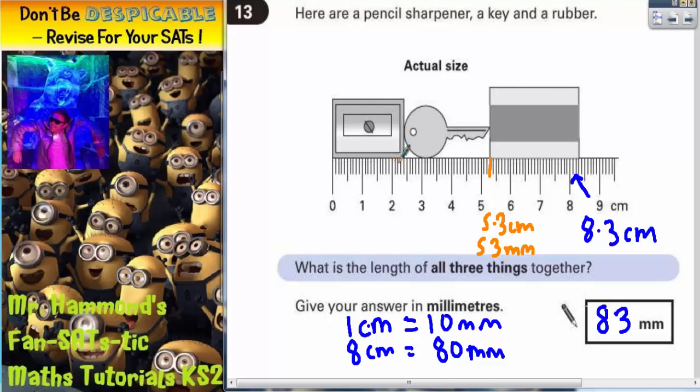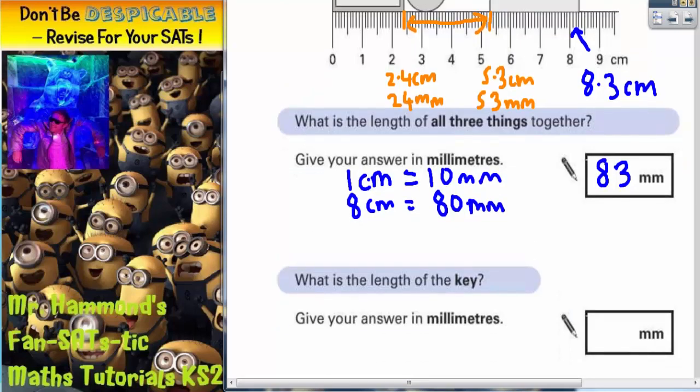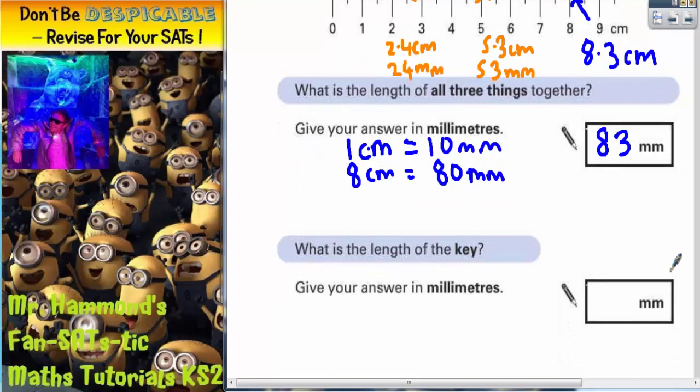The key starts here. The key starts on this line, which is 2.4 centimeters or 24 millimeters. So the gap from 24 millimeters up to 53 millimeters, that is the length of the key. So we need to find that gap. And to find the gap between those two numbers, we just find the difference between them.